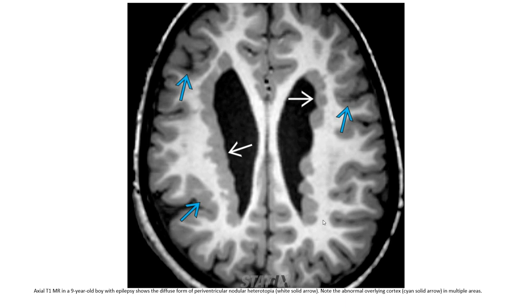This is the axial sequence showing a diffuse form of periventricular nodular heterotopia, with abnormal underlying cortex visible in multiple layers.